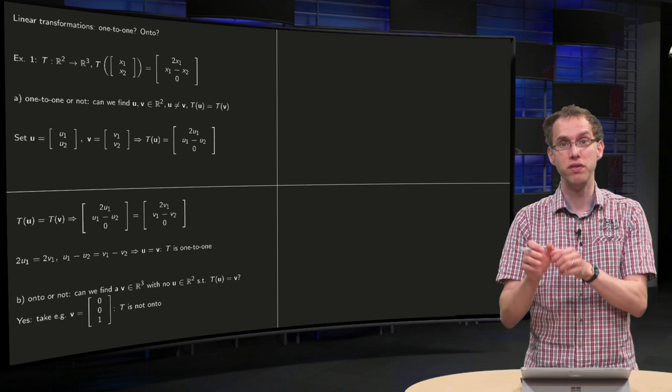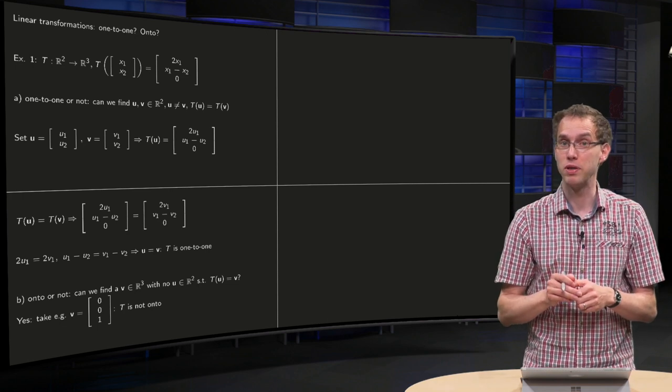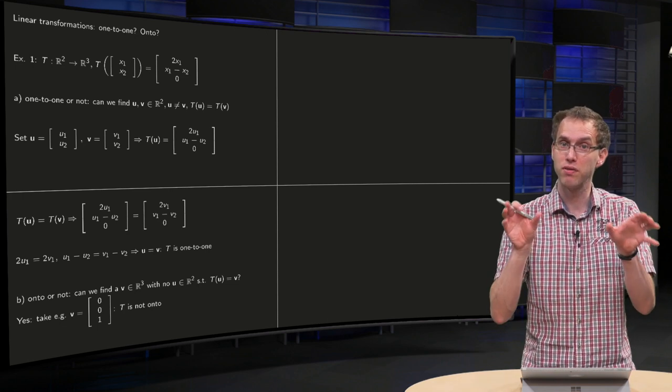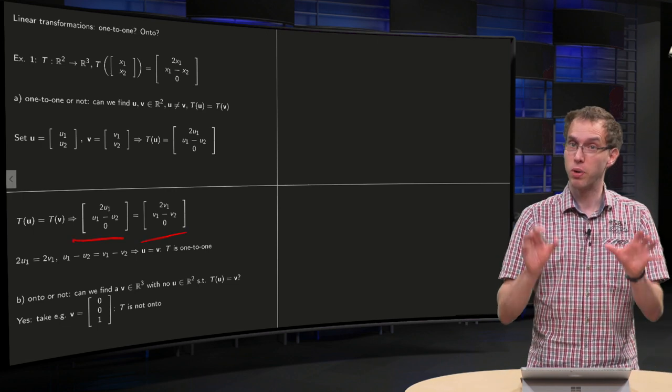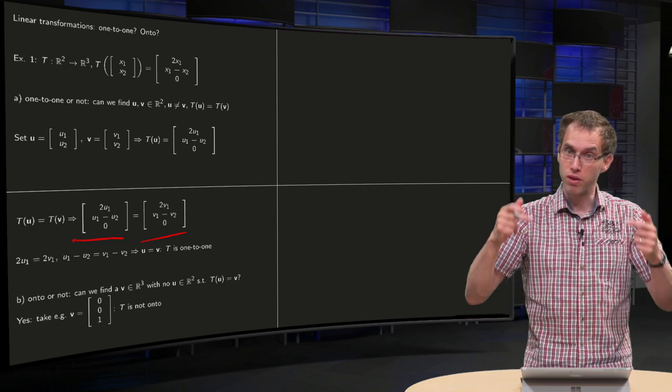Now we set T(u) equals T(v) and see what happens, whether we can still find different u's and v's. Those vectors are only equal if all three components are equal. The last component is fine, of course: 0 equals 0.